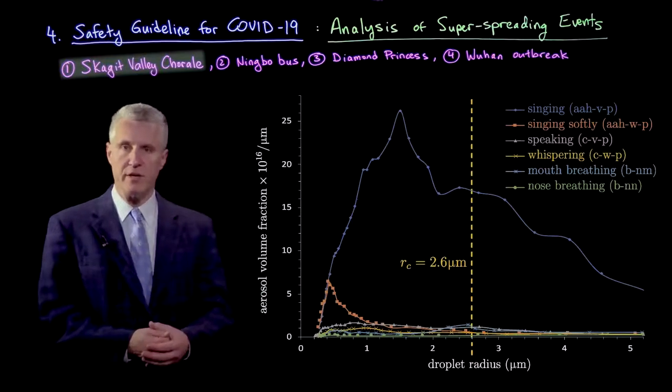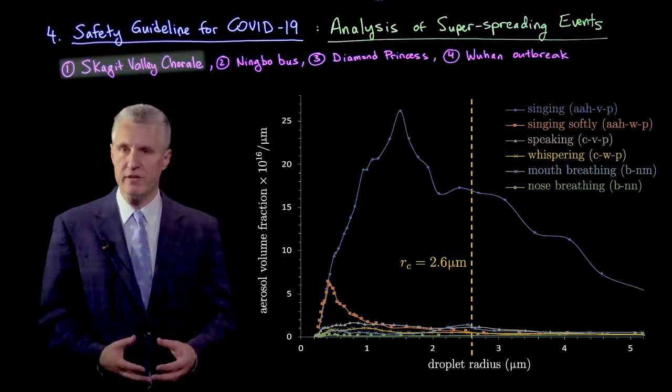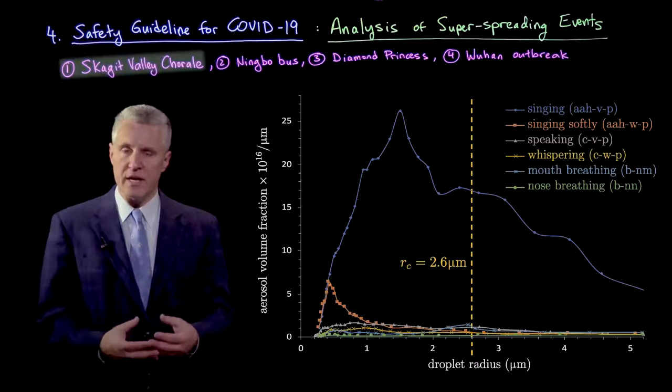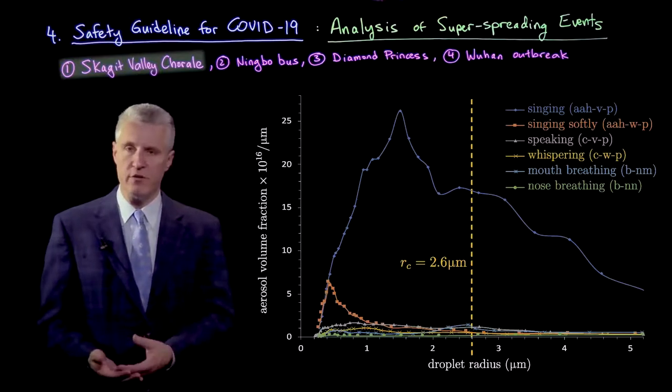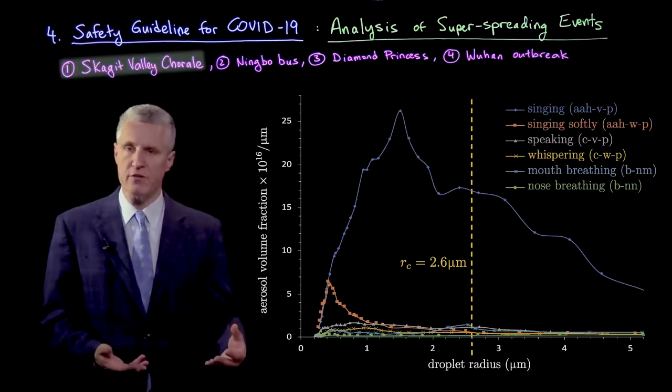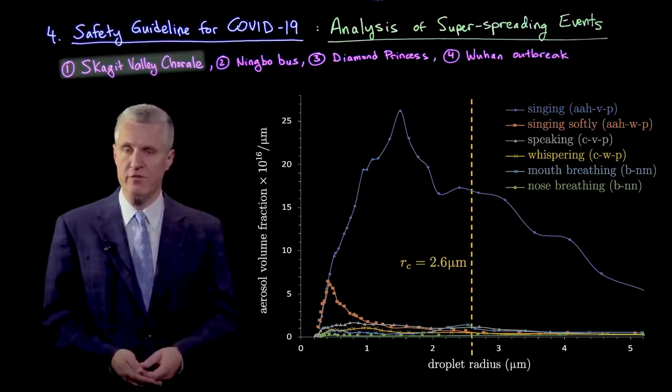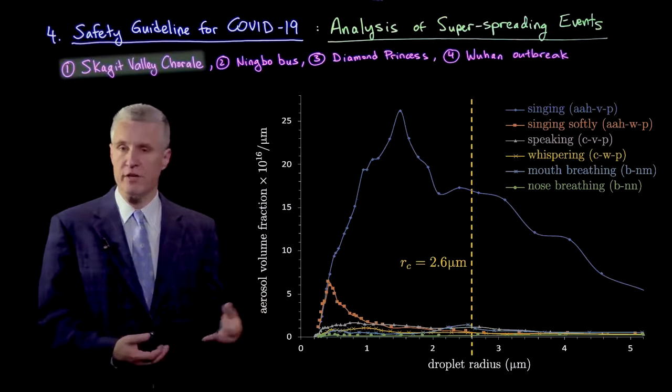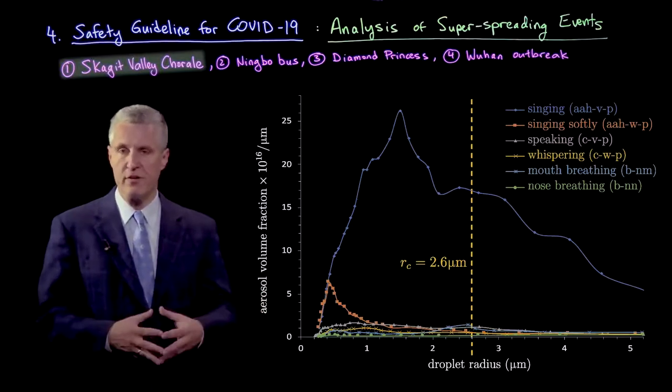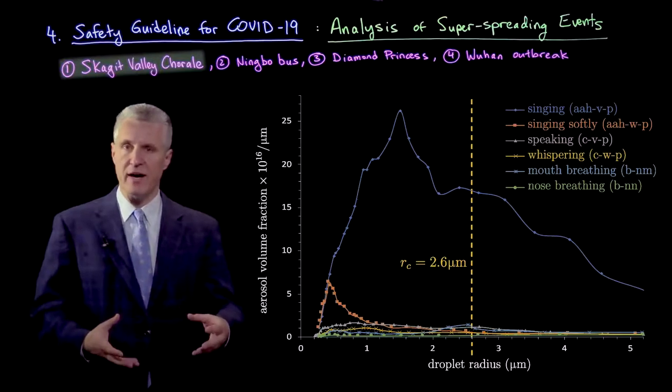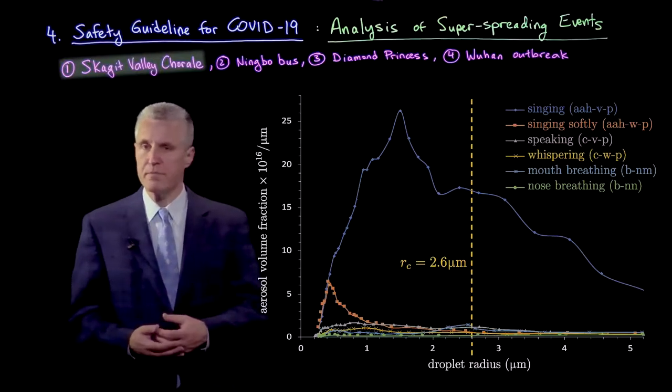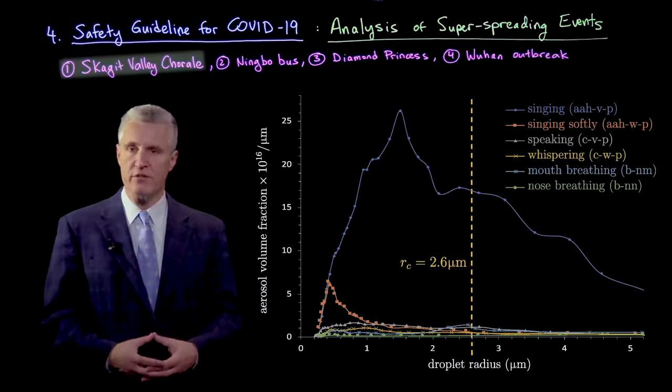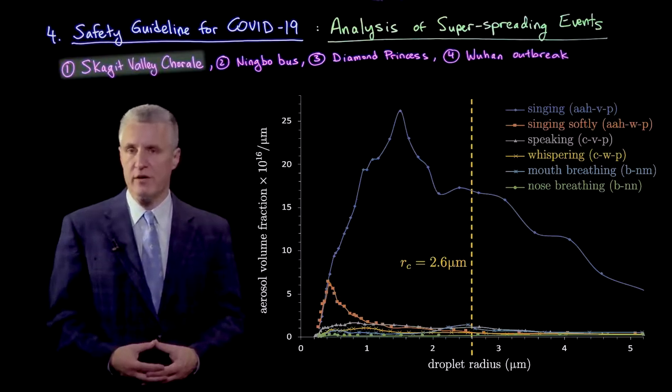If we look at the figure here, we can see the droplet distributions taken from experimental measurements of Morawska et al in 2009. Those droplet distributions have been fed into the model we just described and evolved in time in a way that corresponds to the conditions of the Skagit Valley Choir itself. The droplet distribution corresponding to singing, or the closest approximation of singing, which are measurements of voiced ahs from the original experiment, that distribution is much bigger than all the others. It has a very broad tail to somewhat larger sizes, but has a peak just below 1 micron.